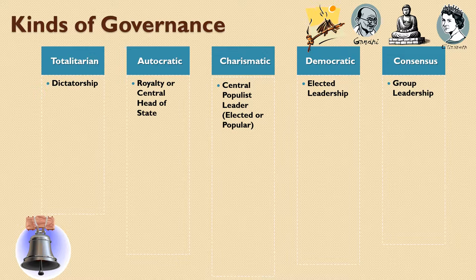Totalitarian government is usually a dictatorship. It is a very top-down form of government. It may have a centralized committee instead of one single person, but the centralized head of state is the basic former of all the rules and laws that are followed. Autocratic is similar, except that instead of having a dictator, you have a royal or central head of state that is there due to tradition.